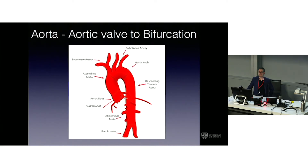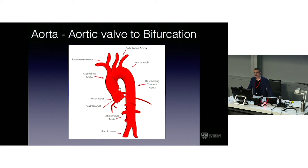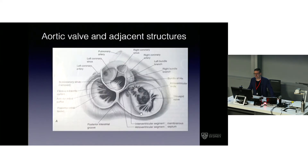Just briefly, the aortic nomenclature we use: the aorta runs from the aortic annulus until the bifurcation into the common iliac arteries. When we speak about the aortic root, we're speaking about from the annulus to the sinotubular junction — that is the entire aortic root. The ascending aorta is from the sinotubular junction until the base of the innominate artery. Then you have the arch until the subclavian, and then the descending aorta.